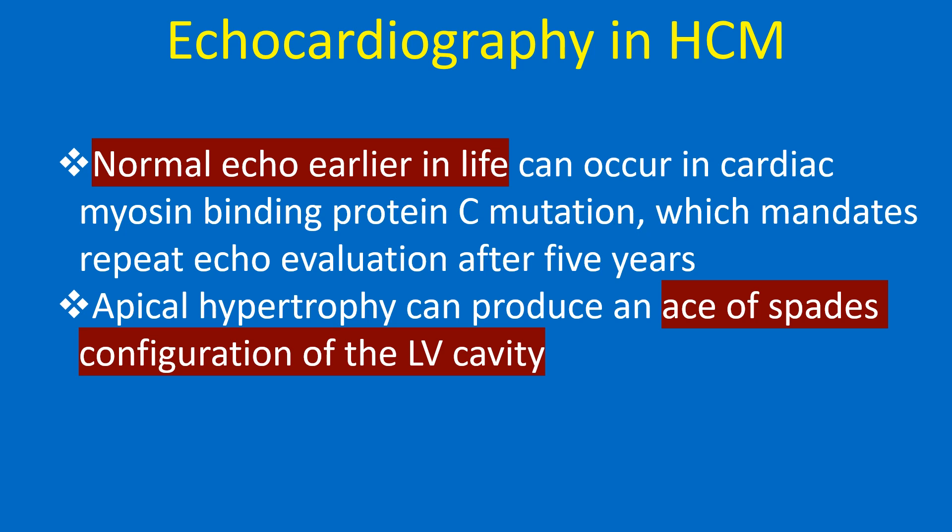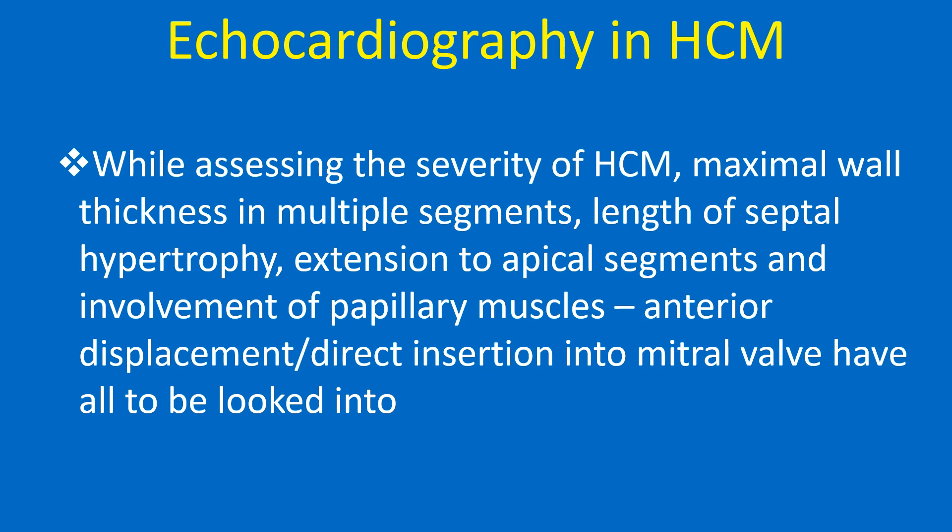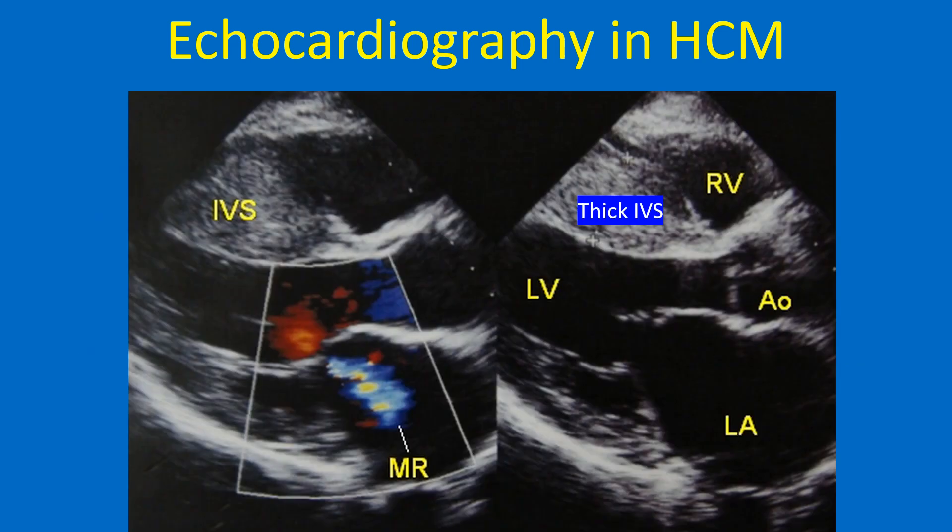Apical hypertrophy can produce an ace-of-spades configuration of the left ventricular cavity. While assessing the severity of HCM, maximal wall thickness in multiple segments, length of septal hypertrophy, extension to apical segments, and involvement of papillary muscles — including anterior displacement or direct insertion into the mitral valve — all have to be looked into. Echocardiogram showing thickened intraventricular septum and mitral regurgitation in HCM.